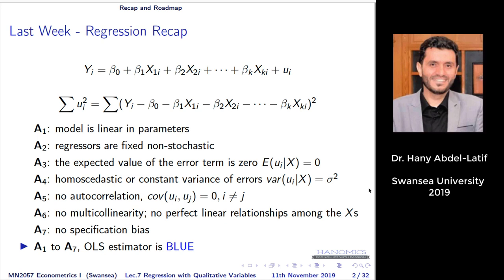We made assumptions about our model — the ideal scenario for how we want it to behave. In most cases these assumptions are not true, so we need to test them. We made assumptions one to seven. For OLS to work, we need a model linear in parameters. The regressors should be fixed or non-stochastic. The expected value of errors given X should be zero. Assumption four: errors are homoscedastic, which the next lecture will cover.